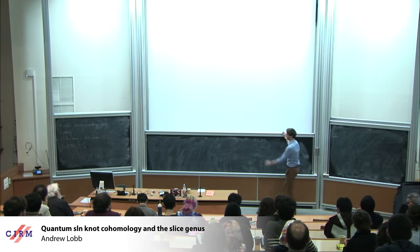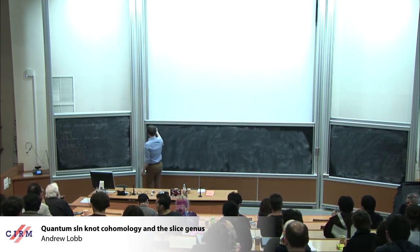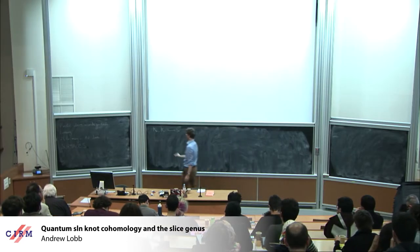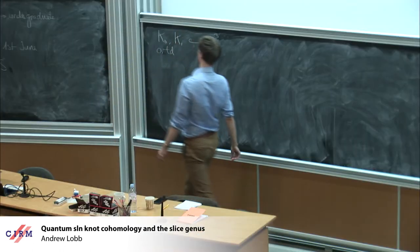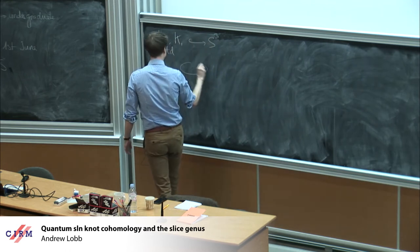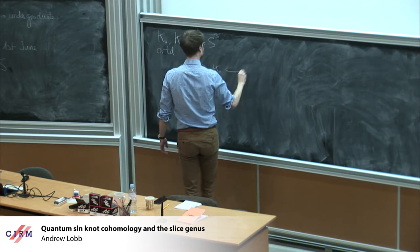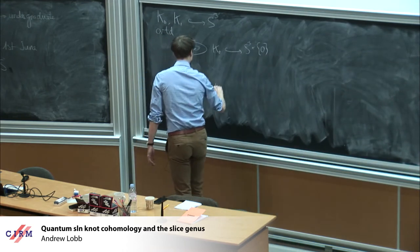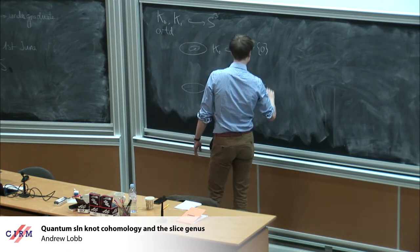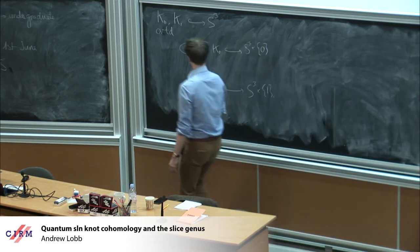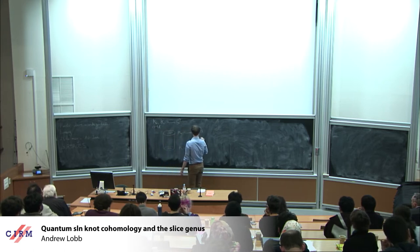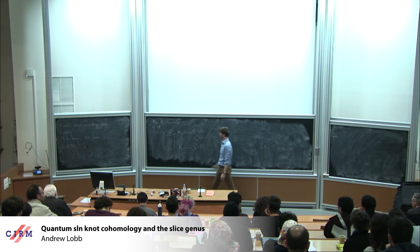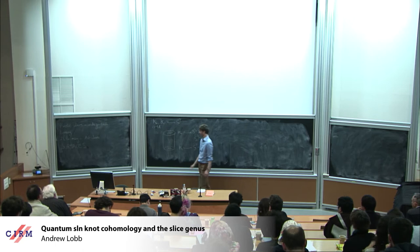Let me start by defining some stuff, and then we can do some math. Suppose you've got two knots k0 and k1, and they happily live inside the three-sphere. I'm going to think of knots as being oriented in this talk. I can take each of them and put them inside a different copy of the three-sphere. A knot cobordism between these two knots is a surface that lies inside this four-dimensional space whose boundary is the knot k0 and the knot k1 at the two boundaries.